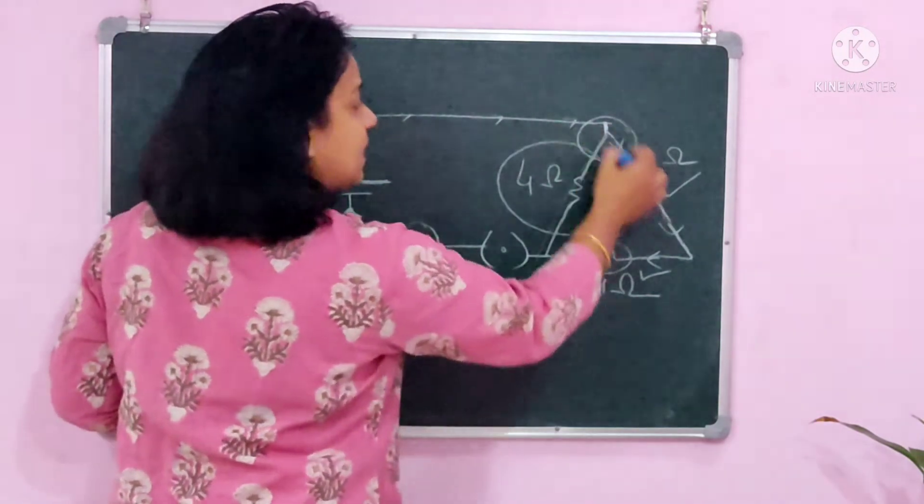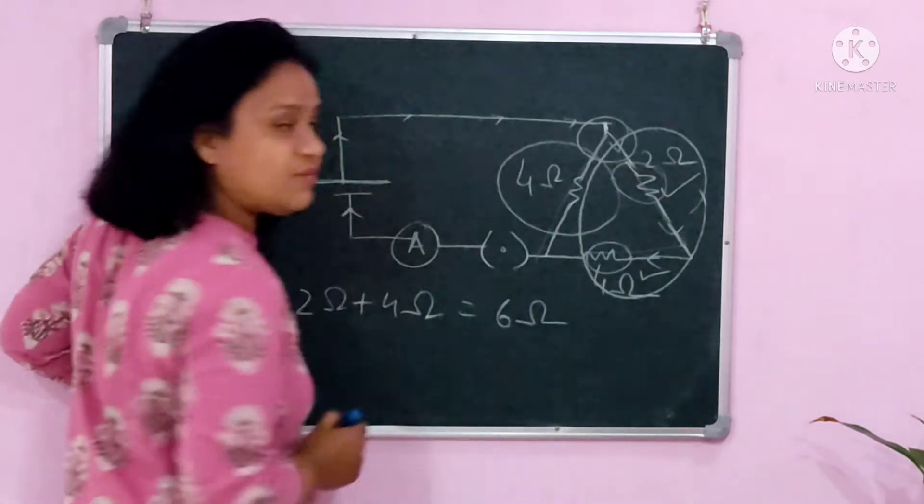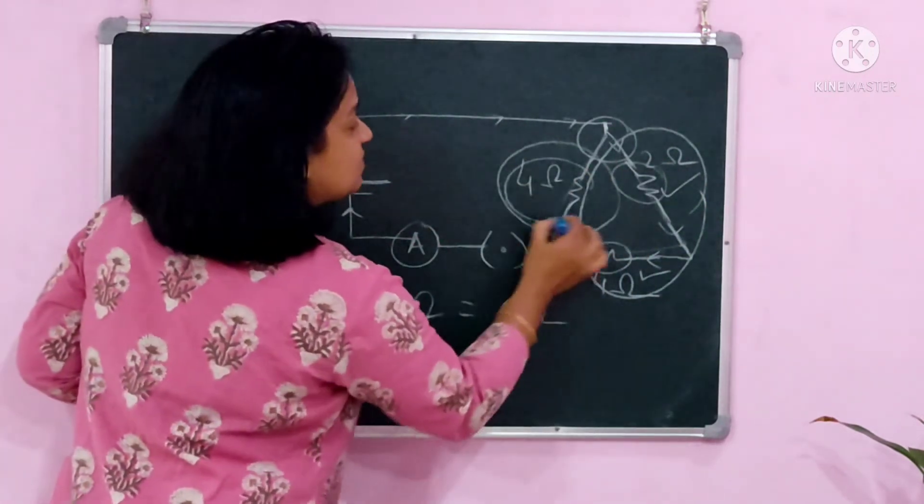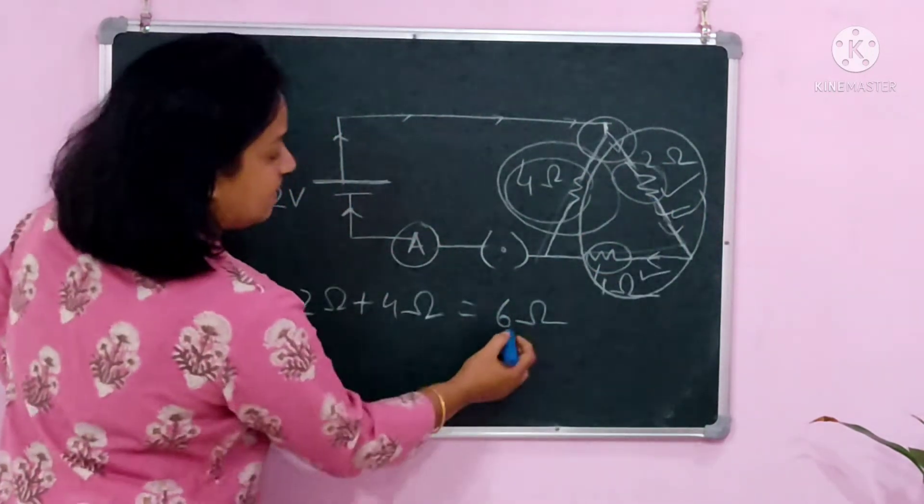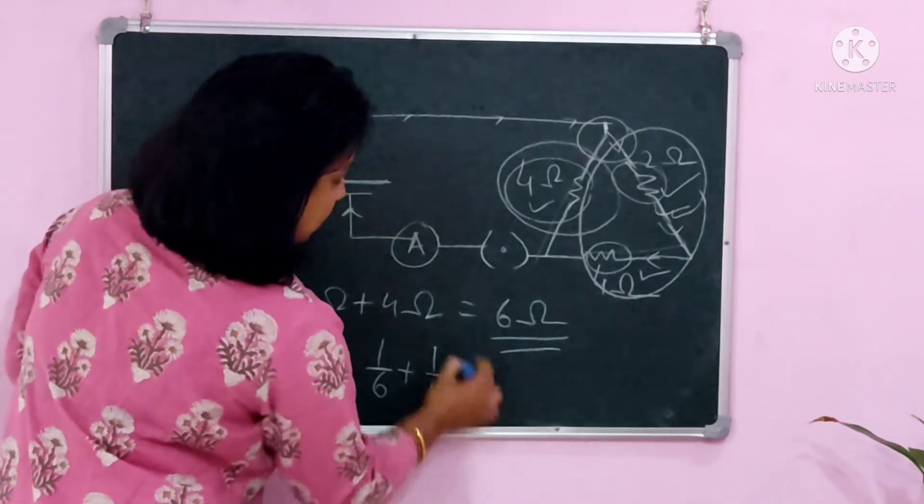there's one resistance here and there's a combination here. So these two are in series with each other and this is parallel to these two. This is the sum that comes and this is the parallel.